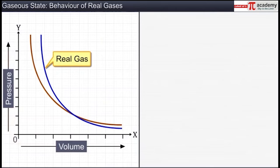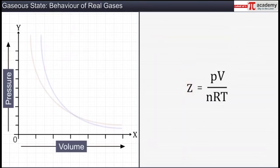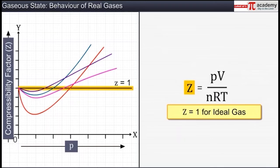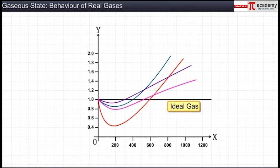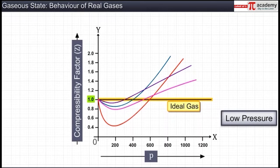The extent to which a real gas deviates from an ideal gas can be measured in terms of the compressibility factor Z, defined as the ratio of PV to nRT. For an ideal gas, the compressibility factor Z is 1 at all temperatures and pressures because PV = nRT. On plotting a graph of compressibility factor against pressure, we get a straight line parallel to the x-axis at very low pressure. We find that at very low pressure, all gases have a compressibility factor approximately equal to 1 and behave like an ideal gas.